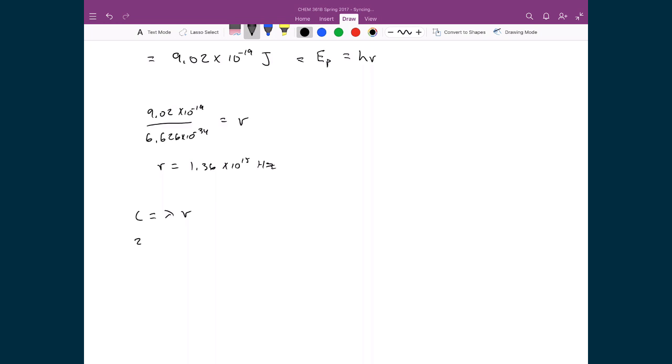Well, the speed of light, that's 2.998 times 10 to the 8 meters per second, divided by this frequency that we just calculated, 1.36 times 10 to the 15. And that equals to the wavelength. So our wavelength that we calculate is 2.20 times 10 to the minus 7 meters.